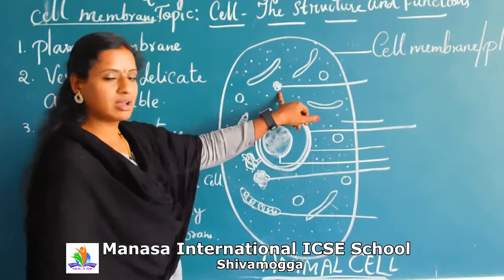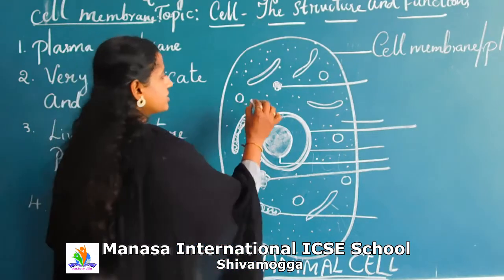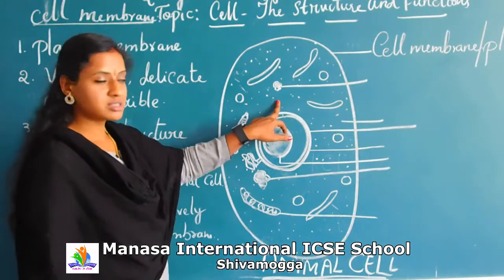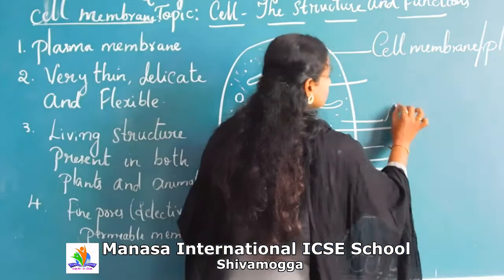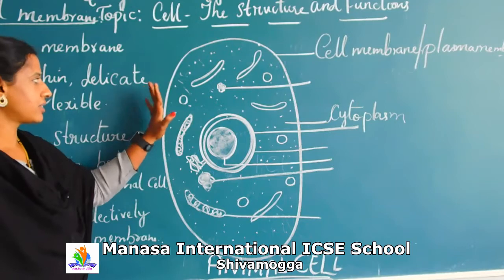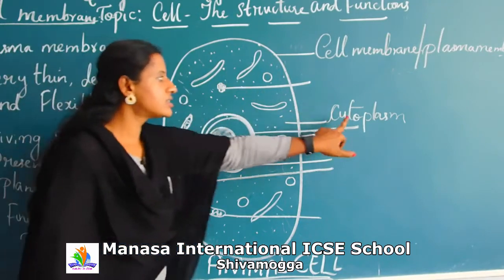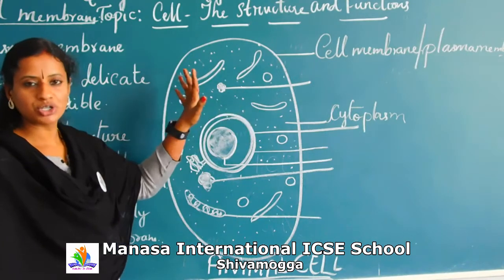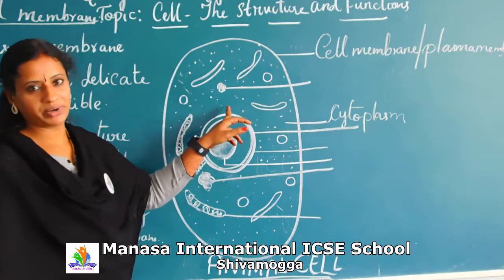Next, inside the cell membrane there is a fluid structure known as cytoplasm. This cytoplasm makes the cell organs alive inside the cell membrane and allows them to carry out their respective functions.